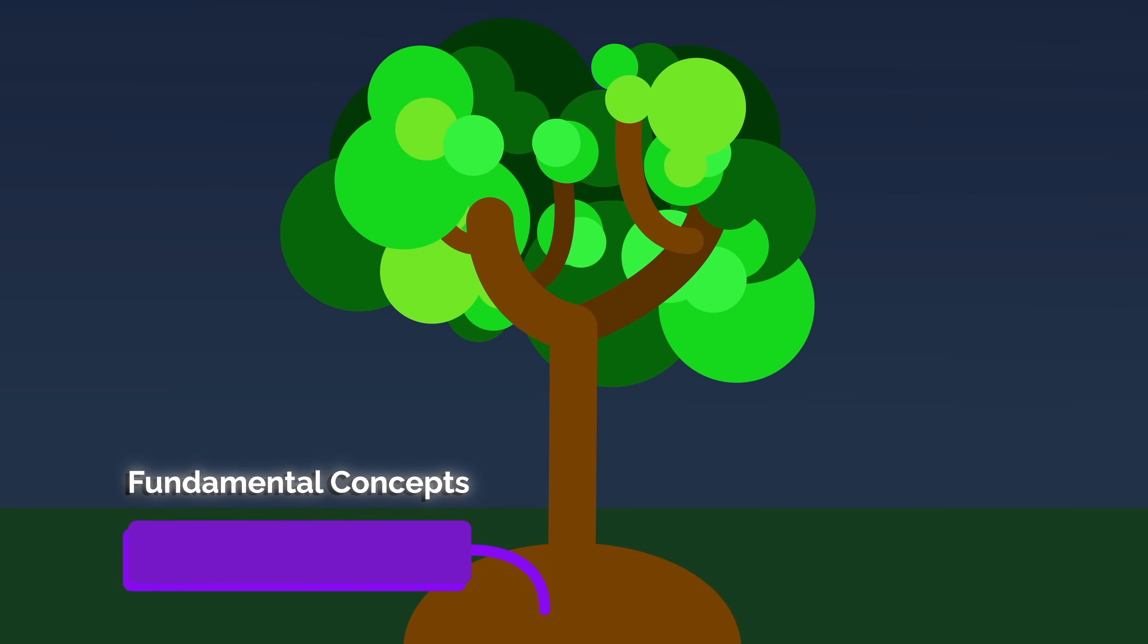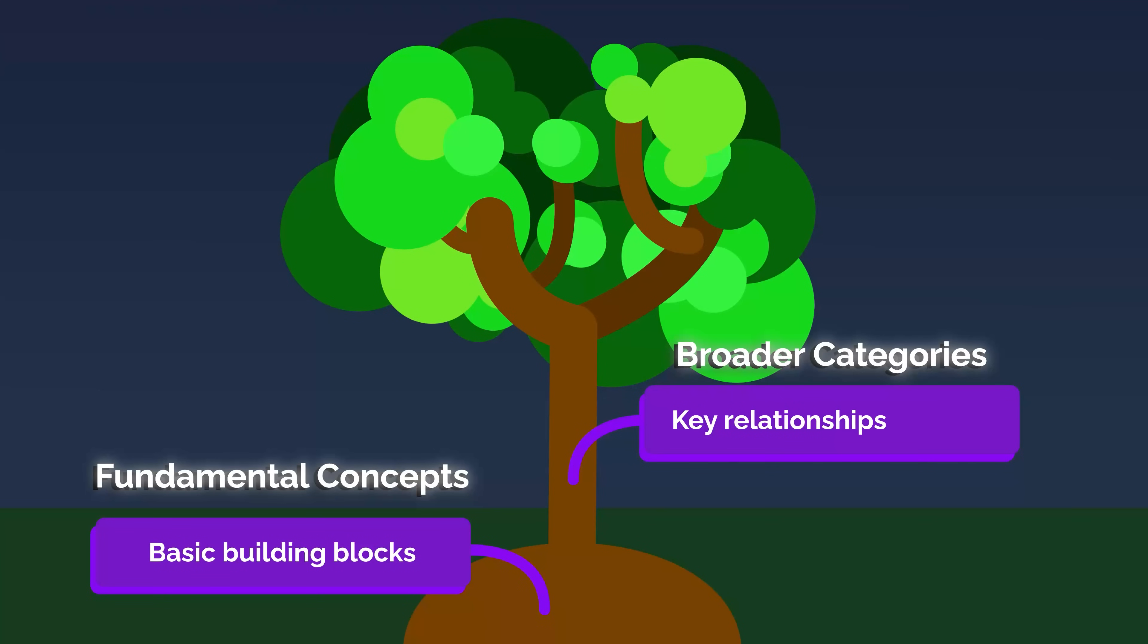The roots are the foundational concepts and basic building blocks that everything else grows from and builds upon. The trunk and major branches represent broader categories and are where key relationships emerge. Smaller branches and leaves are the nuances, examples, and more specific details of what you're learning.